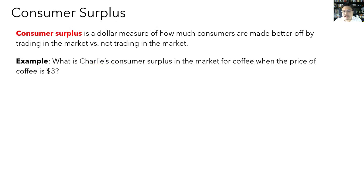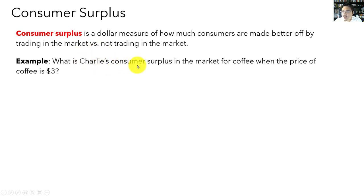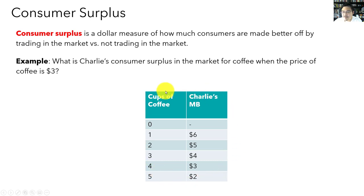Let's start by explaining the concept of consumer surplus. The definition of consumer surplus is that it's a dollar-denominated measure of how much consumers are made better off by trading in the market versus not trading in the market. We're going to start explaining how to calculate consumer surplus using a simple example. There's a consumer in the market for coffee called Charlie, and he has his own personal marginal benefit schedule over the cups of coffee he can choose to consume. We're going to ask: what is Charlie's consumer surplus from participating in the market for coffee when the price of coffee is $3?